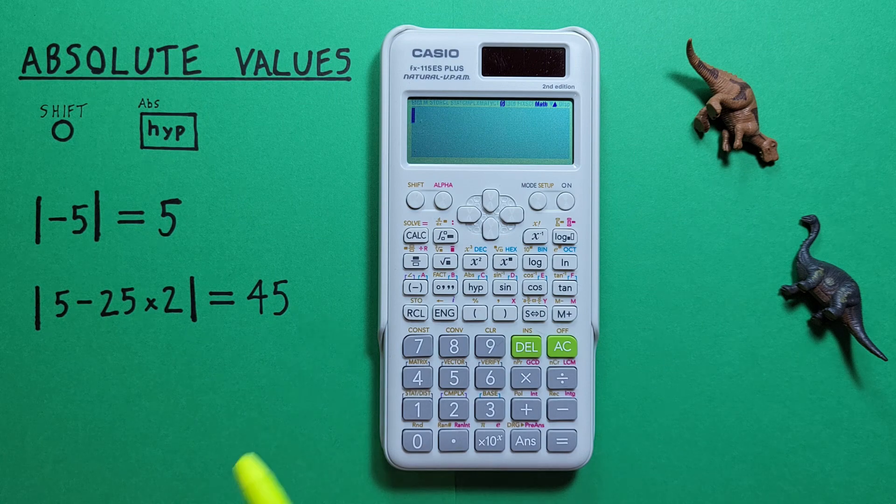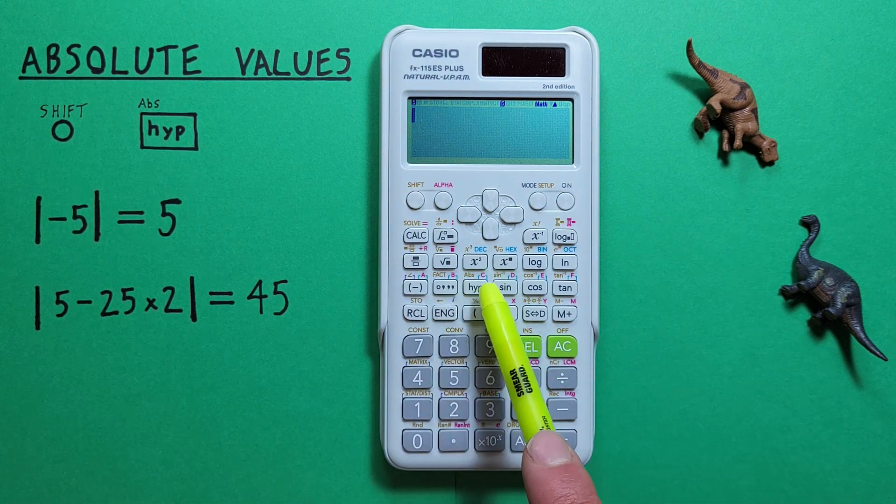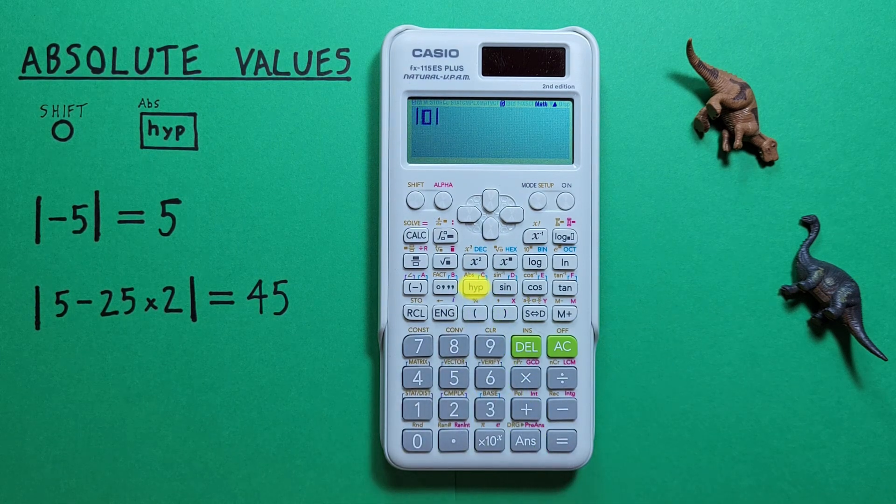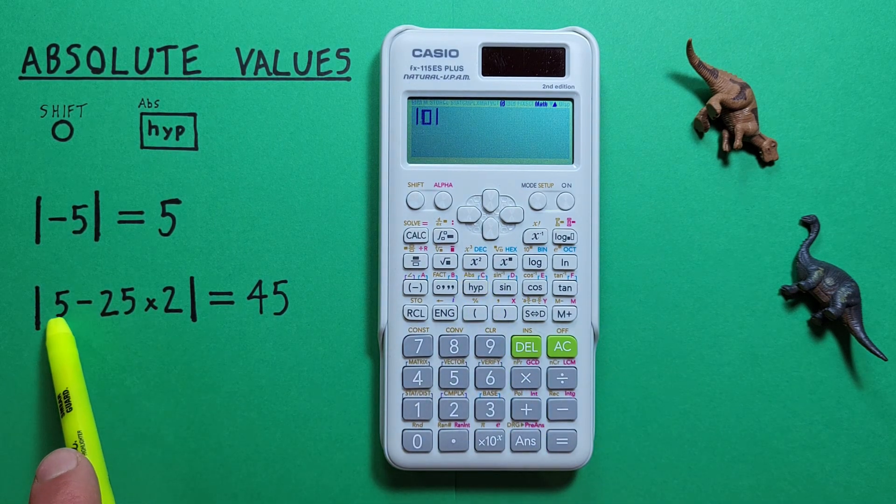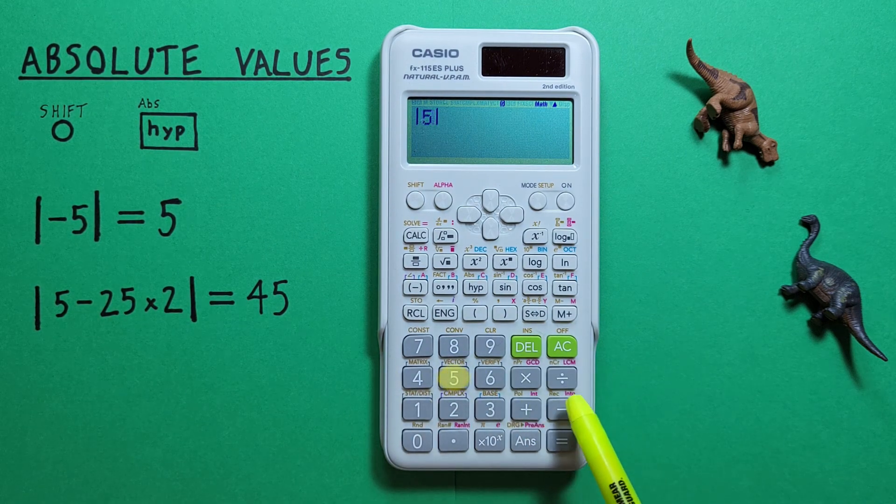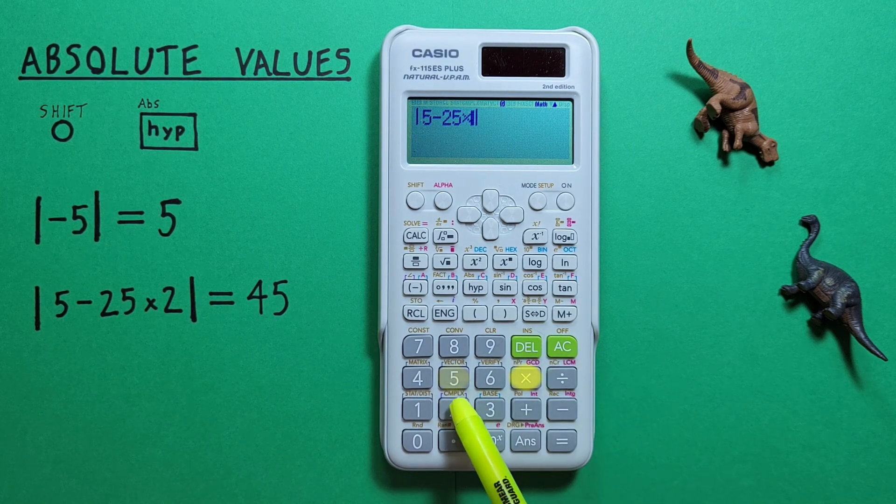To get this again we go shift, and then the HYP or hyperbolic key with the shift function of absolute. There we go, and we enter our equation now, so 5 minus 25 times 2.